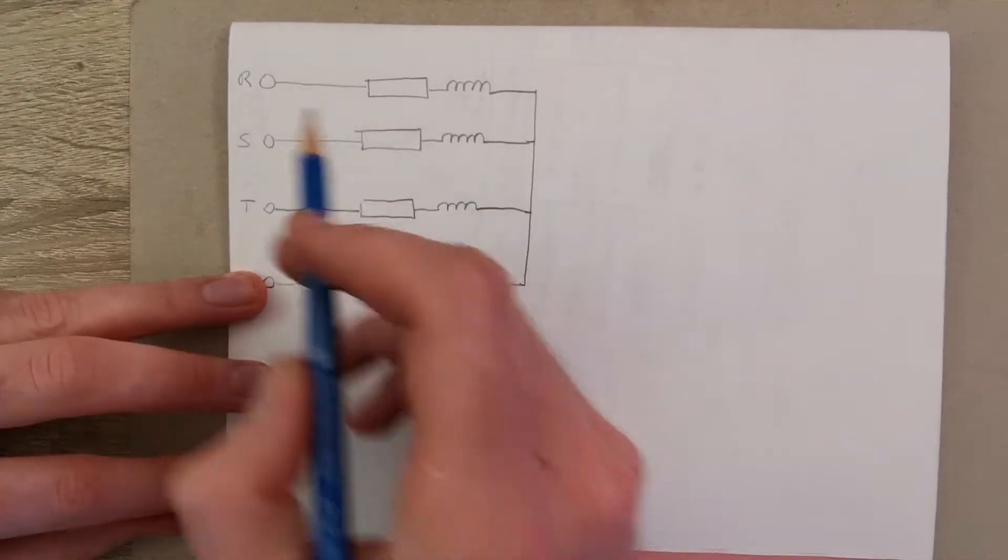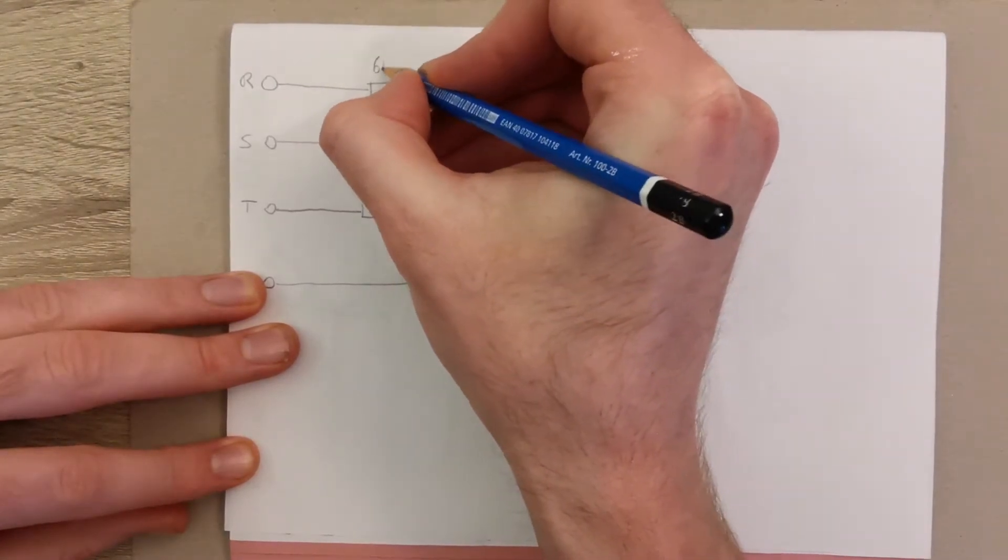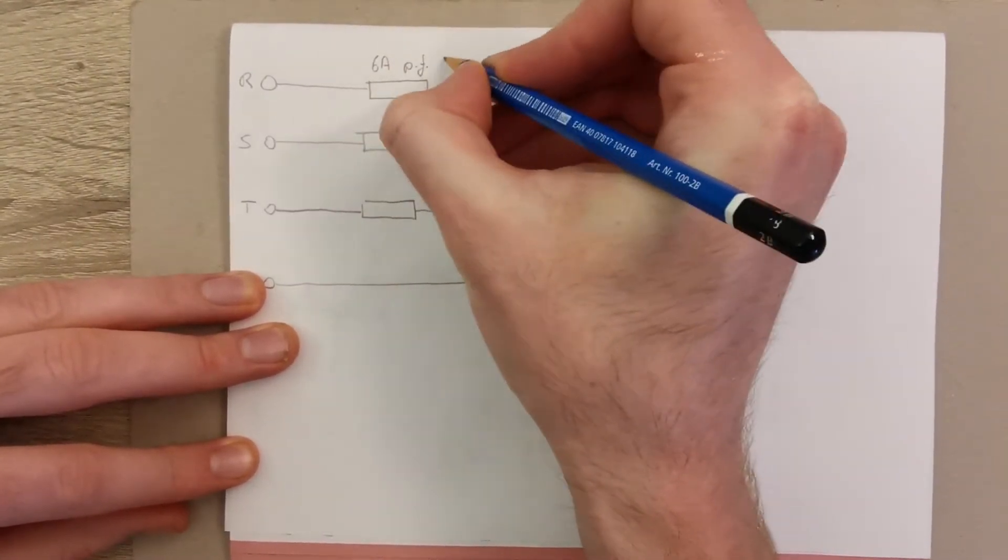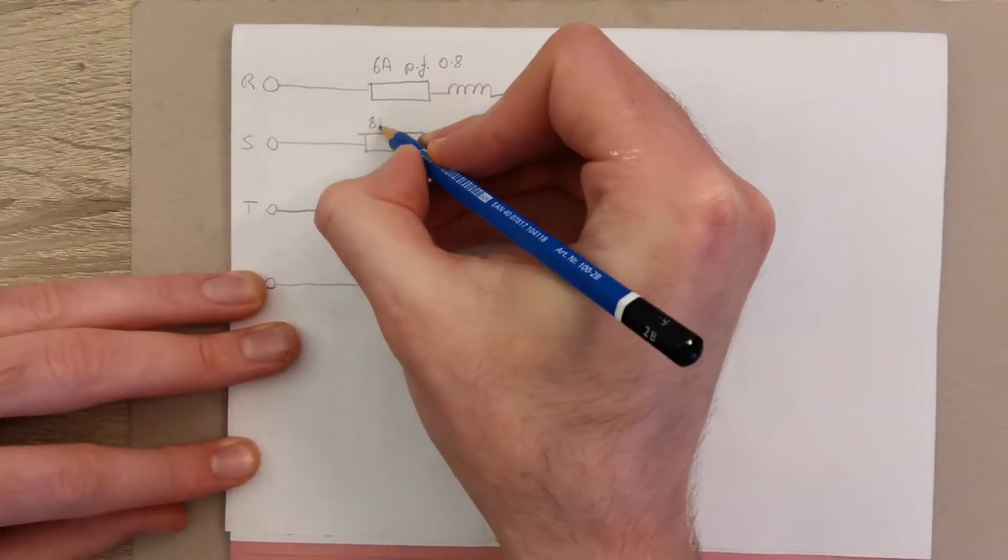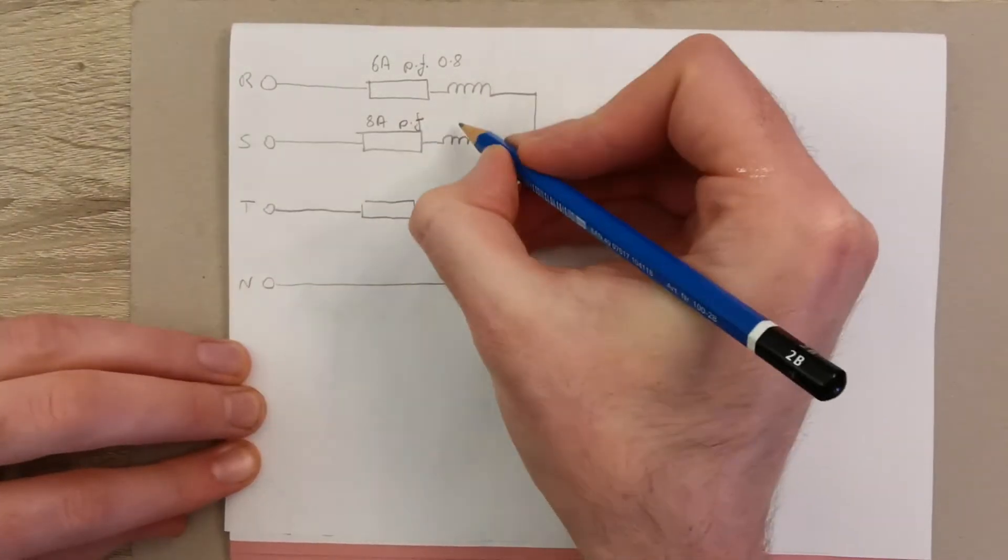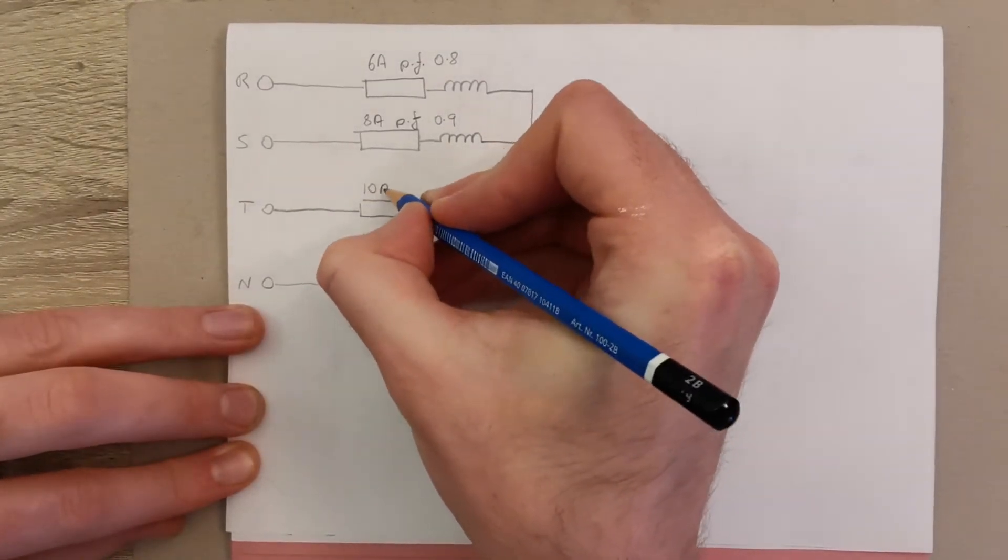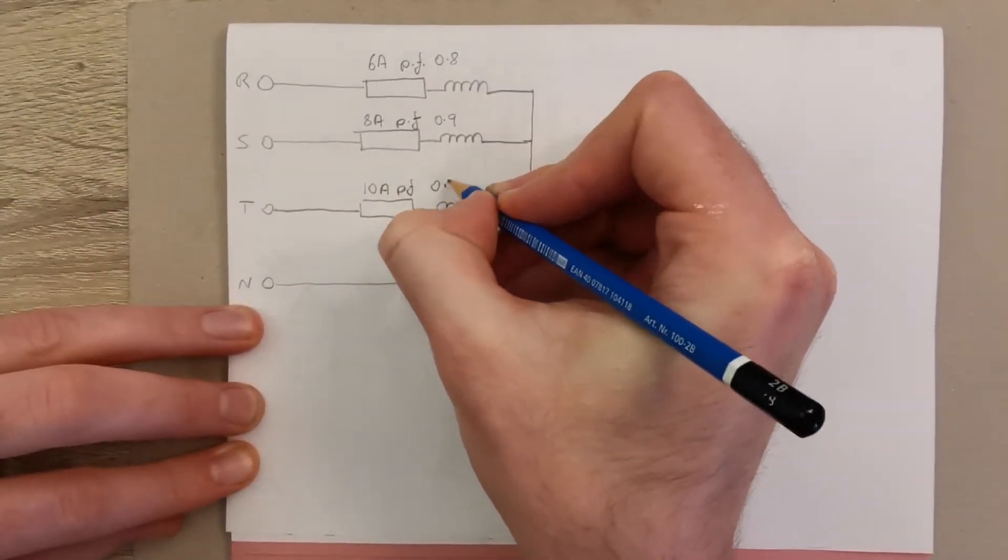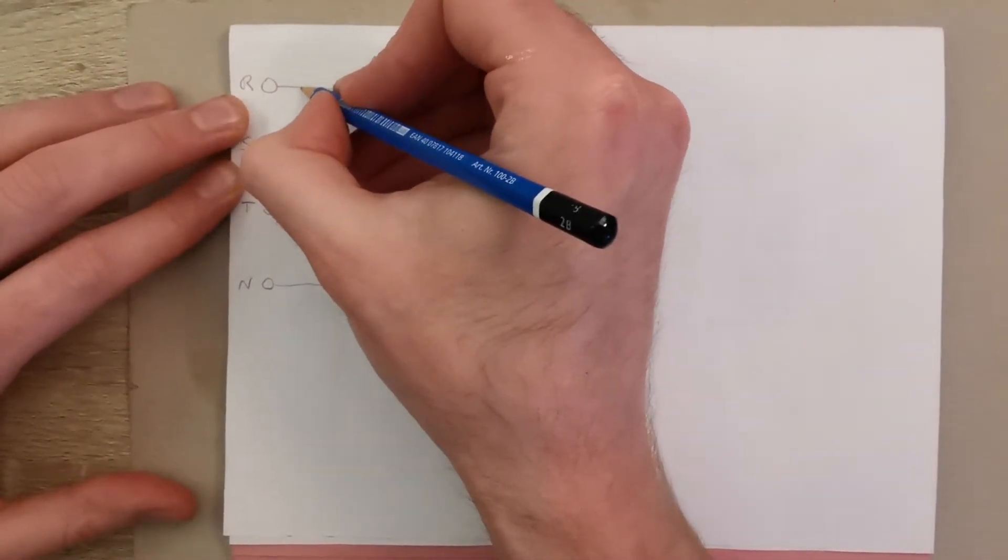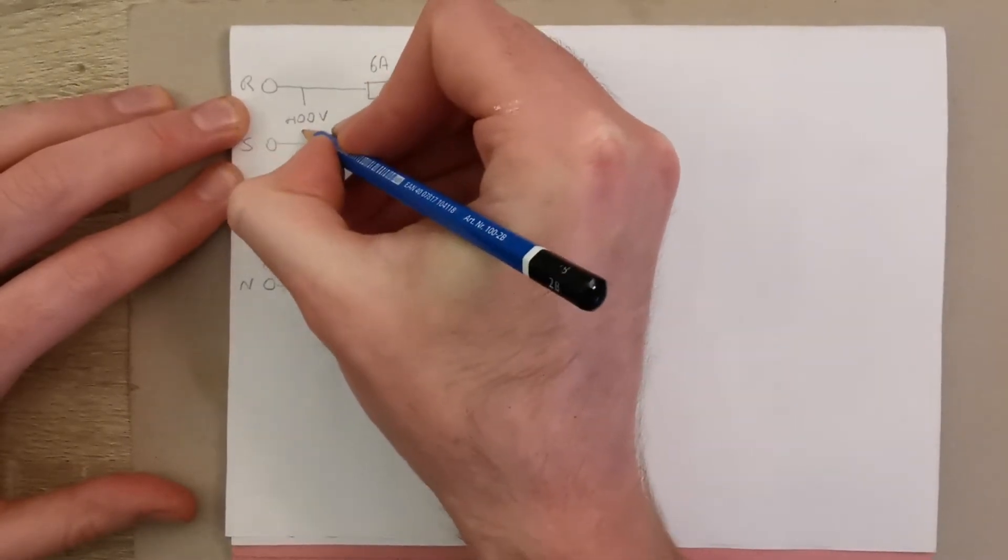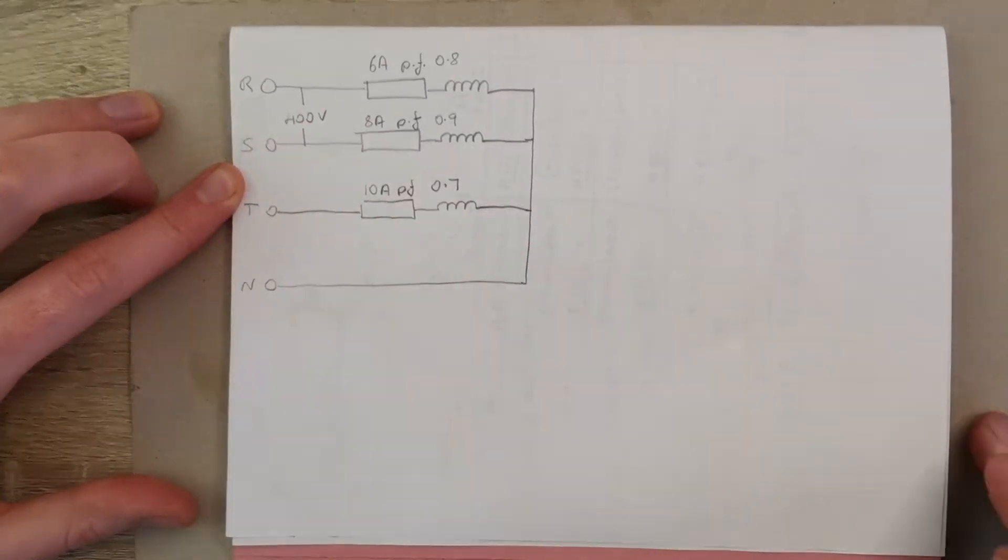So we're told that on this phase here we have a line current of 6 amps with a power factor of 0.8, and on the second phase 8 amps with a power factor of 0.9, and on this phase here we have 10 amps with a power factor of 0.7. And we're also told that the line voltage, as in the voltage across two phases, is 400 volts.